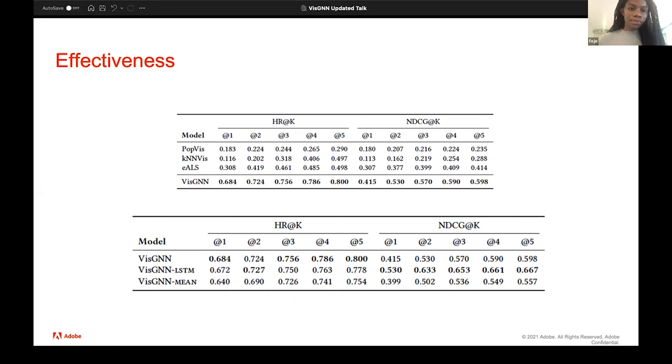So here in this first table, it's showing that for our model, at the first hit, there's a 68% chance that we're going to find the positive visualization. And compared to these other state-of-the-art baselines that we use, POP-VIZ, KNN-VIZ, and EALS, ours is much better. And this is for the hit rate at K. And this also applies to the discount cumulative gain at K as well.